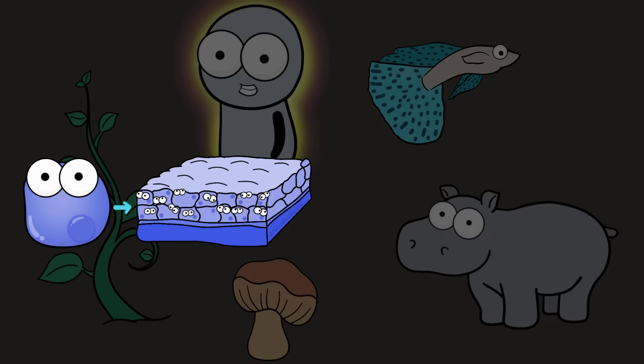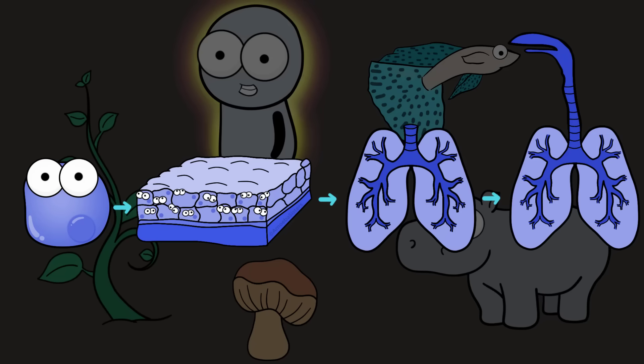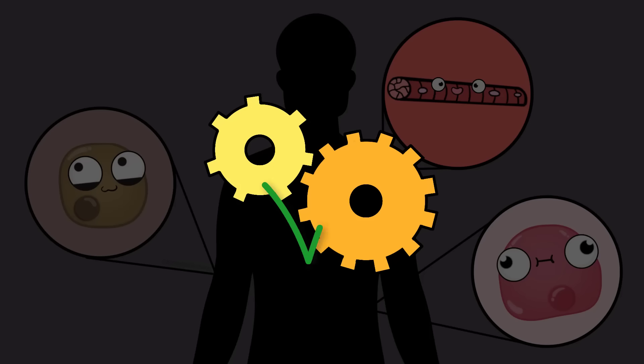Body tissues working together as part of an organ, organs working together as part of an organ system. Your cells are specialized to work in these different levels of organization. You have skin cells, stomach cells, muscle cells, just to name a few, and their functions need to be regulated.